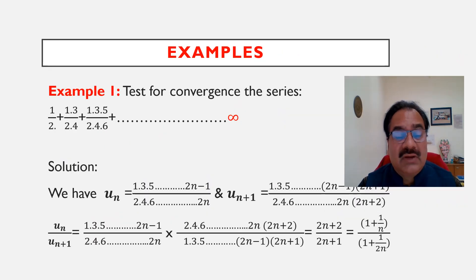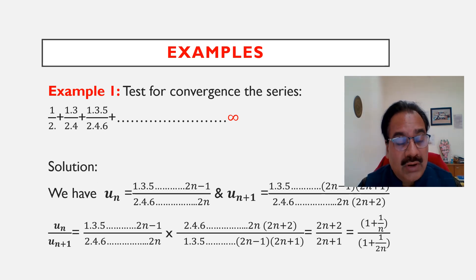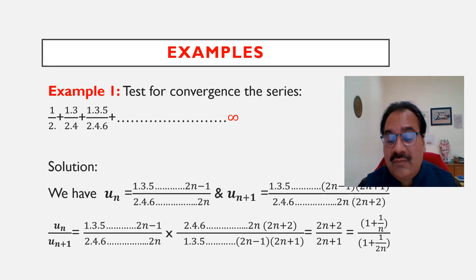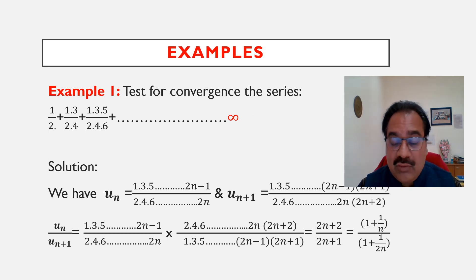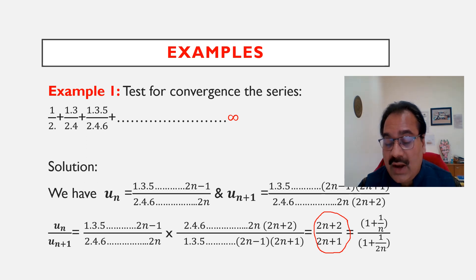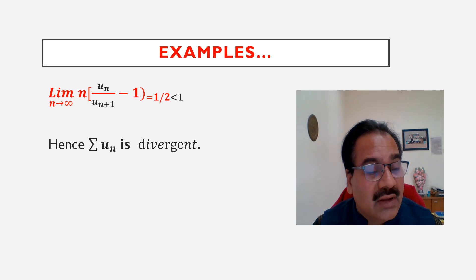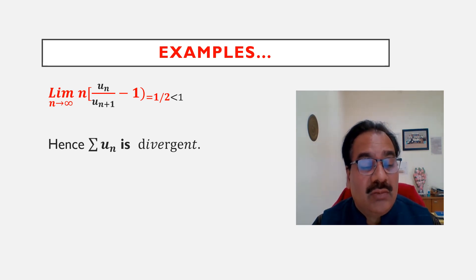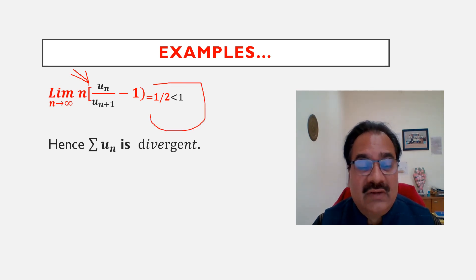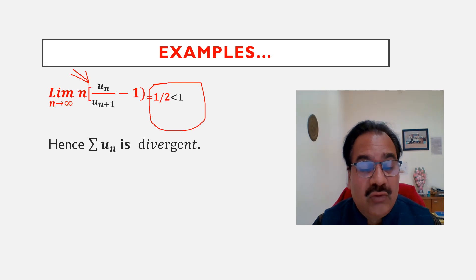Now, a quick problem: test the convergence of the series 1/2 + 1·3/(2·4) + 1·3·5/(2·4·6) + ... The nth term is u_n = (1·3·5···(2n−1)) / (2·4·6···2n), and u_(n+1) adds the factor (2n+1)/(2n+2). So u_n/u_(n+1) = (2n+2)/(2n+1). Taking n outside gives (1 + 1/n)/(1 + 1/(2n)). Applying Raabe's test: limit n tends to infinity of n · [u_n/u_(n+1) − 1] = 1/2. Since 1/2 < 1, by Raabe's test, the given series is divergent.